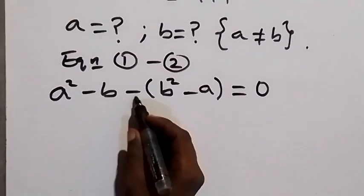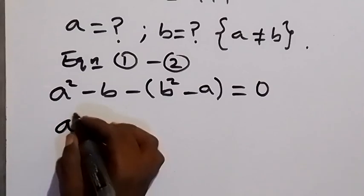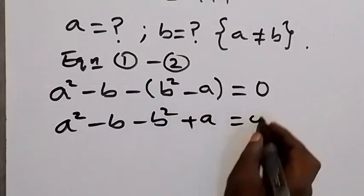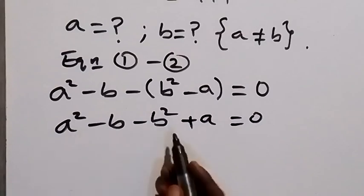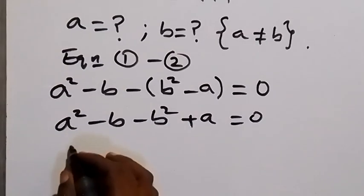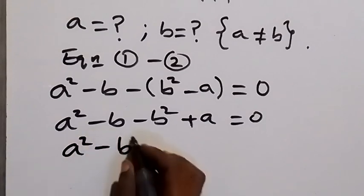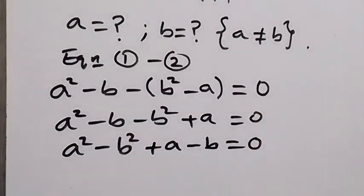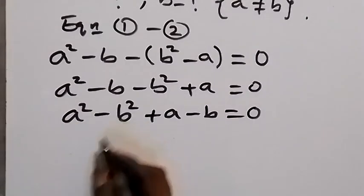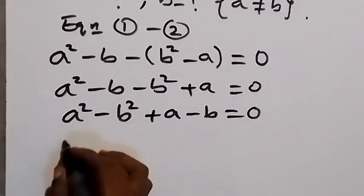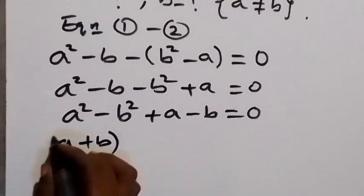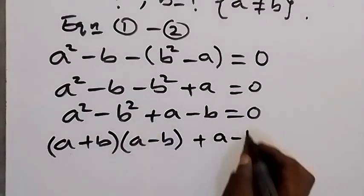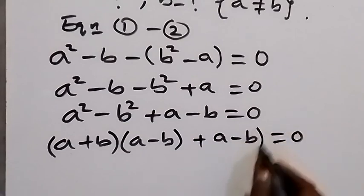We open the bracket with the minus sign, and this becomes a² minus b, minus b² plus a, equals zero. From here we take the square terms together, so we have a² minus b², then plus a, minus b, equals zero.